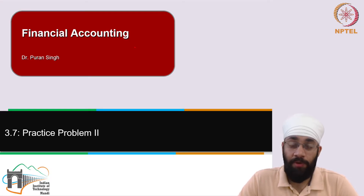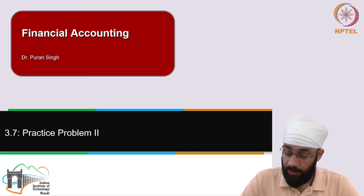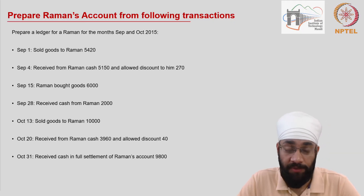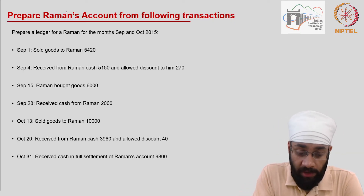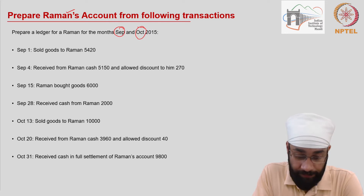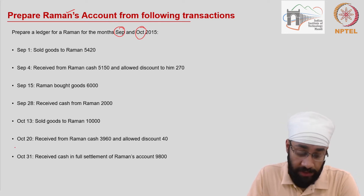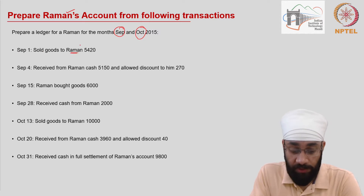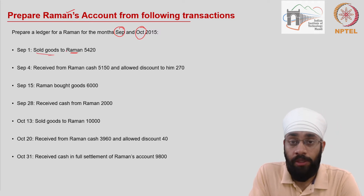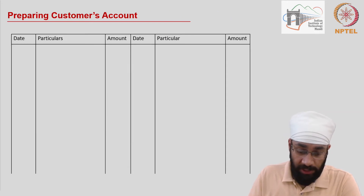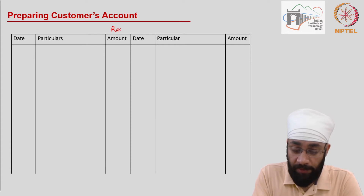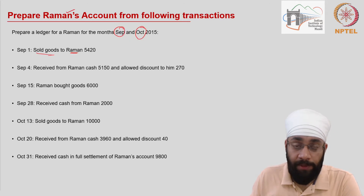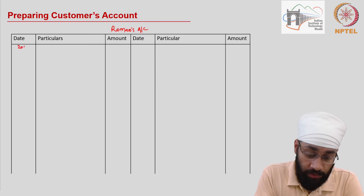This is practice problem two. We're going to look at another account which needs to be prepared from the following transactions. We have to prepare Raman's account for the months of September and October. Some dates have been given to us, and you have transactions being done with a customer, Raman, because we see that you are selling goods to him. I have the format for preparing Raman's account, and I know I have to prepare this for September and October 2015, so I'm going to write 2015 at the top.